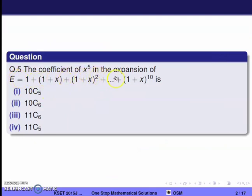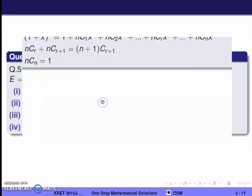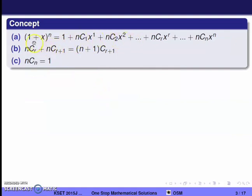The coefficient of x^5 in the expansion of a = 1 + (1+x) + (1+x)^2 + ... + (1+x)^10. Using the binomial concept: (1+x)^n = 1 + nC1·x + nC2·x^2 + ... + nCr·x^r + ... + nCn·x^n. Second concept: nCr + nCr+1 = (n+1)C(r+1), and nCn = 1.